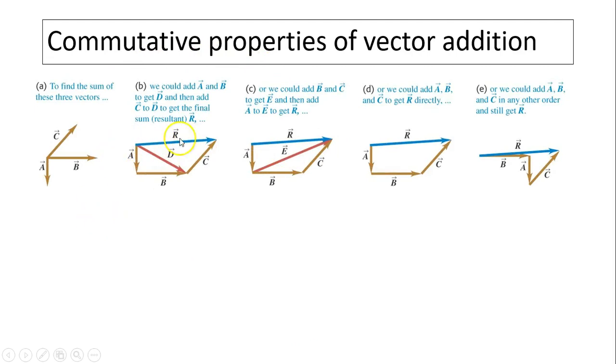Commutative properties of vector addition. Commutative means you can change different orders. Take a look at this A. To find some of these three vectors A, B, C. You can add A and B together to get D first. Then once you have D, you can add D and C. You will get resultant R. Or you could add B and C together first. B and C will give you E. Then you add that E to vector A. You'll have resultant R. Or you can do A, B and C to get R directly. A, B just continue. You'll have the same resultant. Or you can add A, B and C in any other order still get R. So the order doesn't matter.